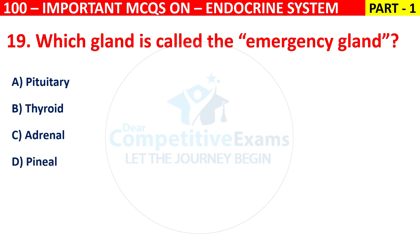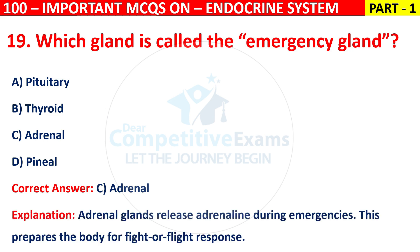The right answer is C, that is adrenal gland. Adrenal glands release adrenaline during emergencies. This prepares the body for fight-or-flight response.